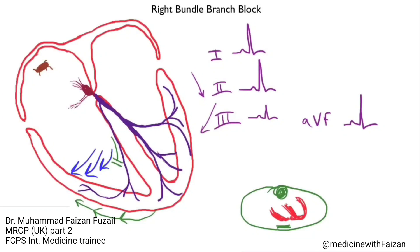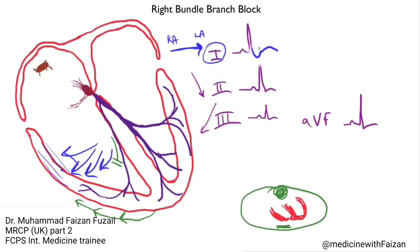Those late signals show up on the lateral leads. Lead 1 goes from right arm to left arm, so it's looking for signals going towards the left side. Since the right ventricle is on the right side and signals are traveling away, you're going to see late, negative signals on the tail end of the QRS complex in the lateral leads. The signal is small because the right ventricle is relatively thin and doesn't generate a lot of electrical current. It's wide because these signals travel slowly from cell to cell around the right ventricle. And it's negative because these signals are going in the opposite direction from where lead 1 is looking.